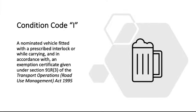Condition code I: a nominated vehicle fitted with a prescribed interlock, or while carrying and in accordance with an exemption certificate given under section 91R of the Transport Operations Road Use Management Act 1995.